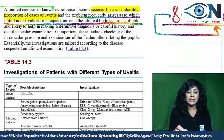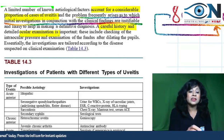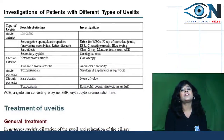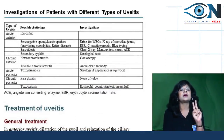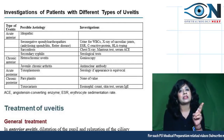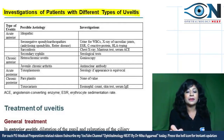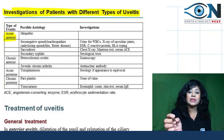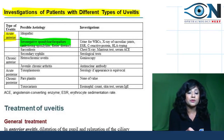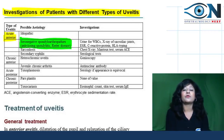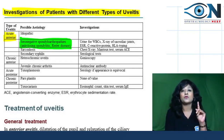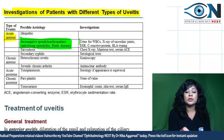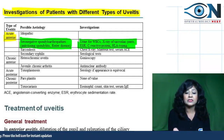You must take careful history and detailed ocular examination including intraocular pressure and fundus examination. Based on this, a flow chart is provided. For acute anterior uveitis, it is mostly idiopathic — no investigations needed. But if you suspect seronegative spondyloarthropathies, you do urine for WBC, X-ray for sacroiliac joints, ESR, C-reactive proteins, and HLA typing.